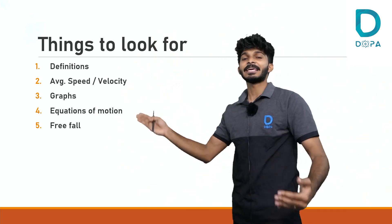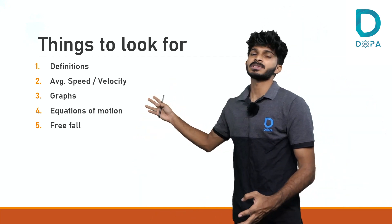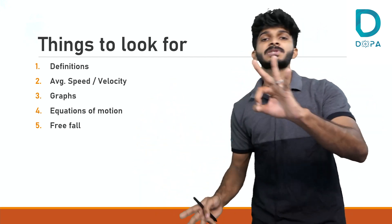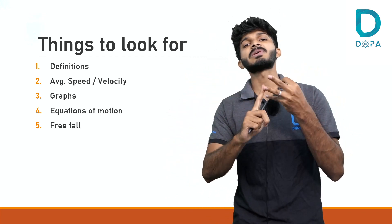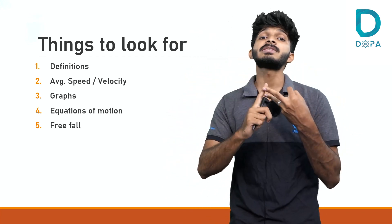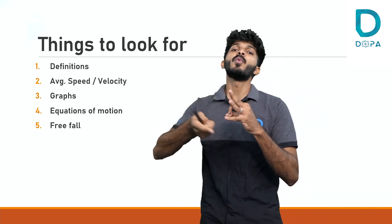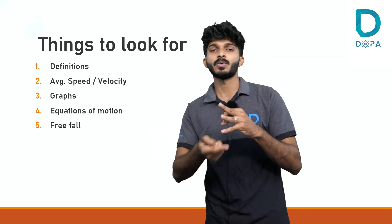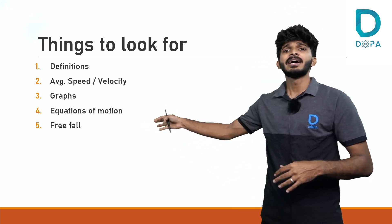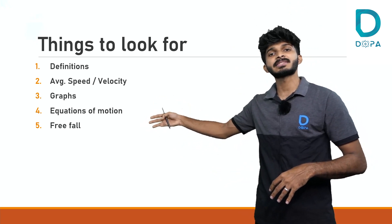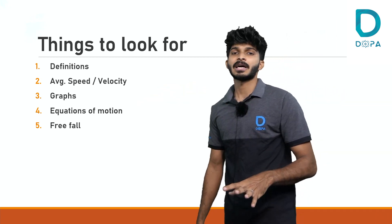The soul of this chapter — the foundation of the entire chapter — is the equations of motion. There are three equations of motion: v = u + at, s = ut + ½at², and v² = u² + 2as. You need to know their derivation and where and how to apply these equations. Finally, free fall is actually an extension or modification of the equations of motion. That's pretty much about the chapter.